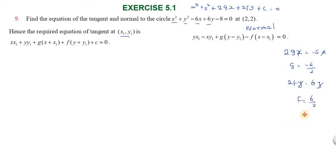And c = -8. Now at the point (x₁, y₁) = (2, 2), we substitute into our tangent formula.